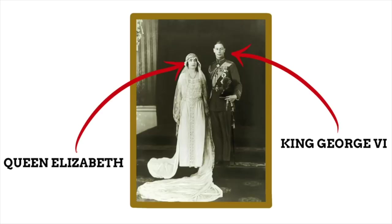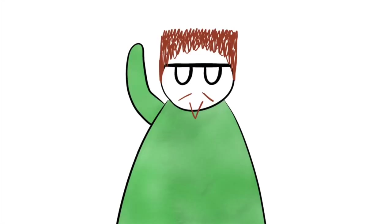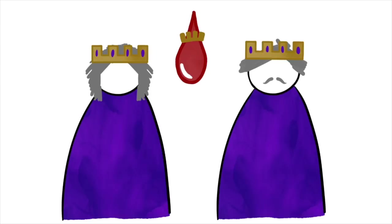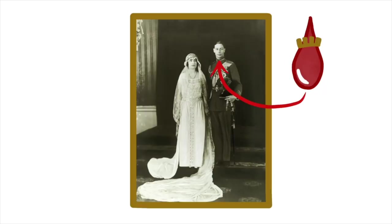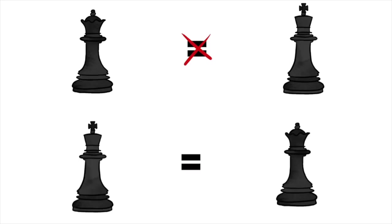It all comes down to British traditions and which partner of the royal couple is actually of royal blood. In our current monarchy, Queen Elizabeth is the actual member of the royal family and her husband Philip is from another family. With the previous monarchy, it was King George the Sixth — our current queen's father — who was of royal descent, with his wife Elizabeth being from another family. So have you figured out the pattern?